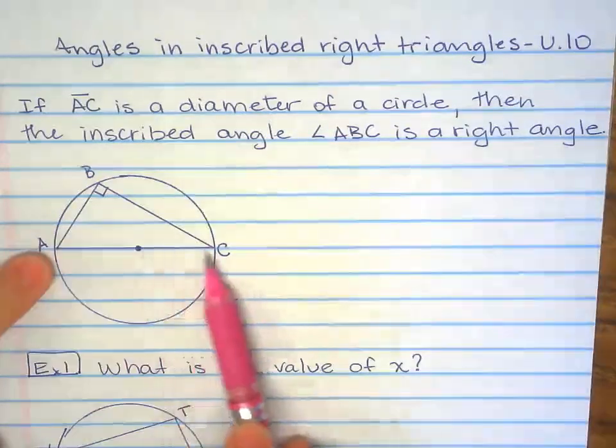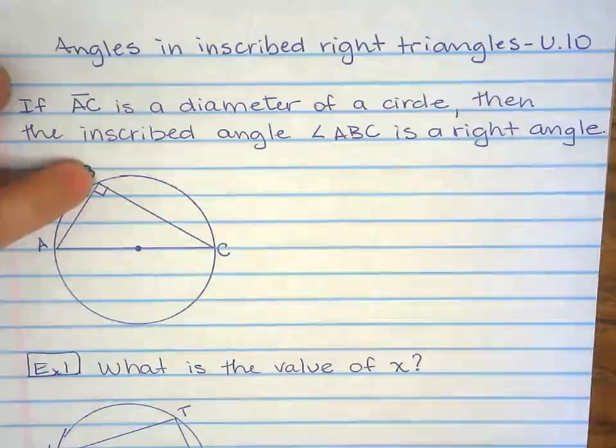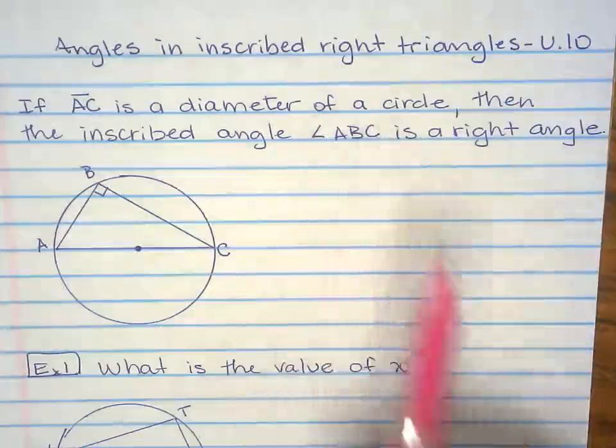So if this one is a diameter, that means this angle right here will always be a right angle, will always be a 90 degree angle, even though it's not going to be noted, because this is something you've got to know.